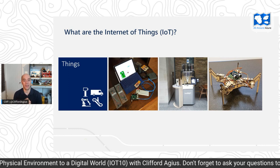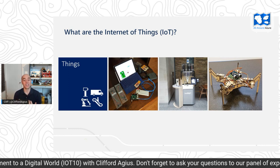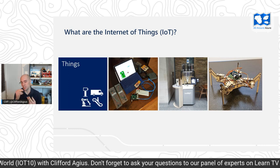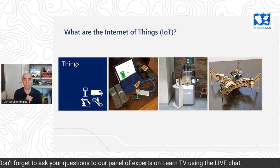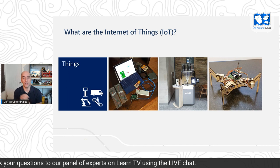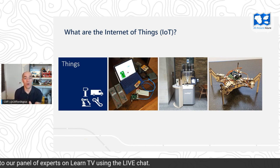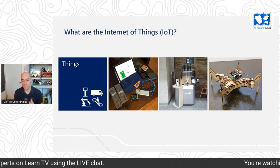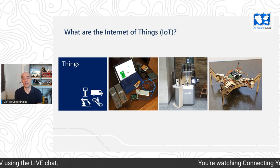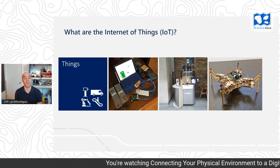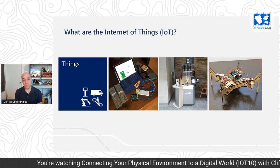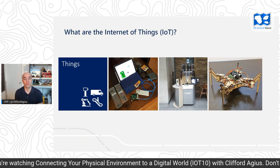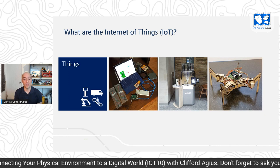That is the data that gets sent up to the cloud. It could be acceleration, velocity, heat, temperature, humidity, or a GPS location for doing geofencing of your trucks out on the road. All those sensor values get sent by telemetry up to the cloud, and then in the cloud we have the Azure IoT Hub, which streams that data in and then processes it to give you insights.